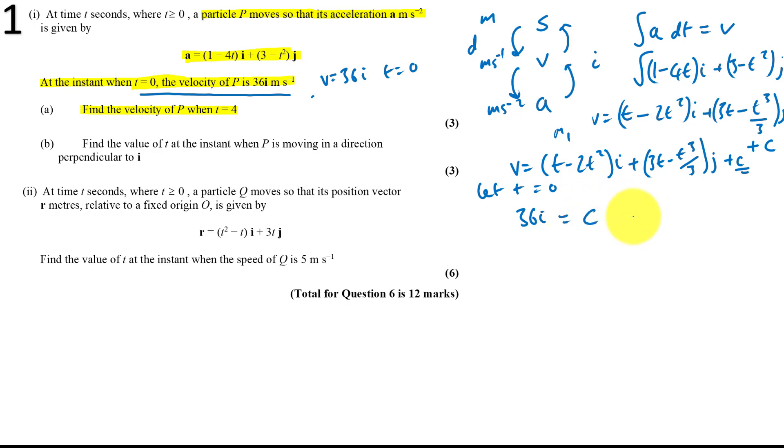That's going to get us, and actually if you just write that, that gets you an accuracy mark. So that's going to help us if C equals 36i. Find the velocity of P when t equals 4. So our new formula is essentially V equals t minus 2t squared i plus 3t minus t cubed over 3 j plus C, which is 36i. So we just substitute t equals 4 in. Sub t equals 4, and what are we going to get? We will get V equals 8i minus 28 over 3j meters per second. So that's another accuracy mark. So that should be an easy 3 out of 3.